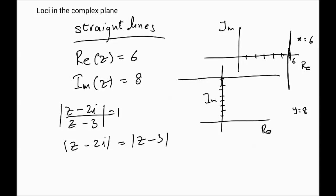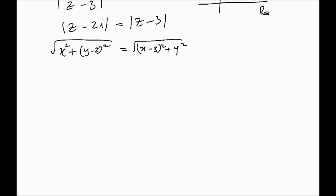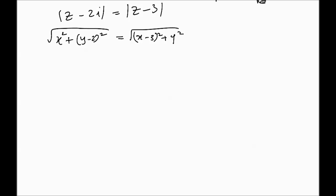So z is x plus iy. The modulus of this will be the square root of x squared plus y minus 2 squared equals the square root of x minus 3 squared plus y squared. Because we have square roots, we square both sides, and that gives us x squared plus y squared minus 4y plus 4 equals x squared minus 6x plus 9 plus y squared.